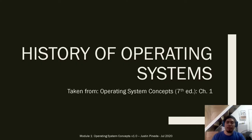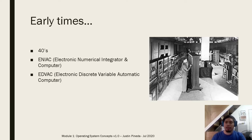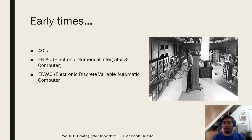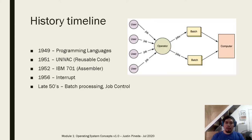Let's start with operating system history. In the early times during the 1940s, we start with the ENIAC and the EDVAC. ENIAC stands for Electronic Numerical Integrator and Computer, and EDVAC stands for Electronic Discrete Variable Automatic Computer. These are similar to our calculators. During the 40s, there was no interface between the user and the hardware, so everything was hard-coded because the functions were very straightforward — just adding, subtracting, and so on.